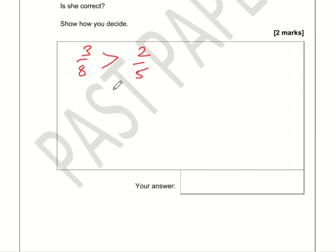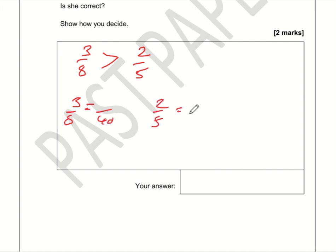What we need to do is convert both fractions so they have the same denominator. The easiest way is to use a common denominator of 8 times 5, which is 40. So three-eighths is what over 40, and two-fifths is what over 40? To turn 8 into 40 we multiply by 5, so we multiply the 3 by 5 to get 15.